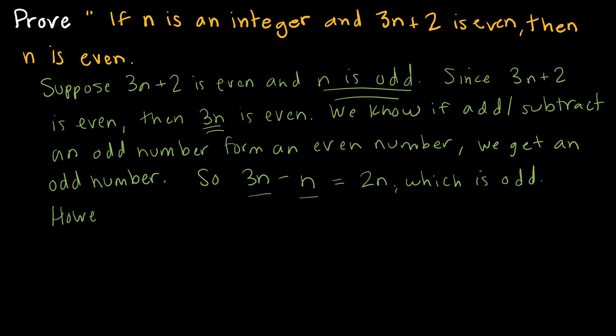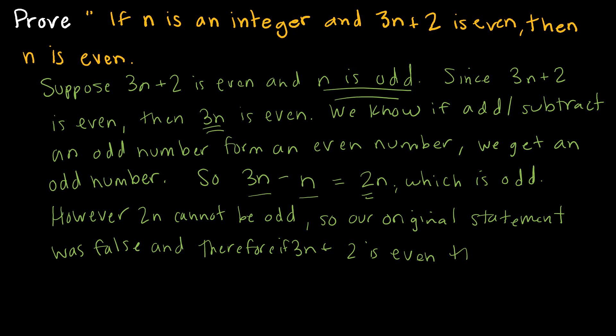So however, 2N cannot be odd because it's 2 times some number. So our original statement was false. Therefore, if 3N plus 2 is even, then N is even.